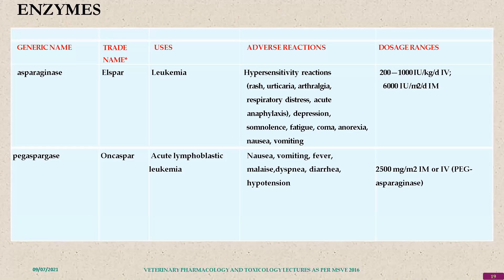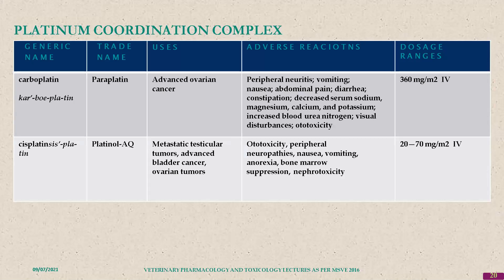Enzyme-based drugs include asparaginase, used in leukemia. Pegaspargase is also used in acute leukemia. Platinum coordination complexes include carboplatin, used in advanced ovarian cancer, and cisplatin, used in metastatic testicular cancer.